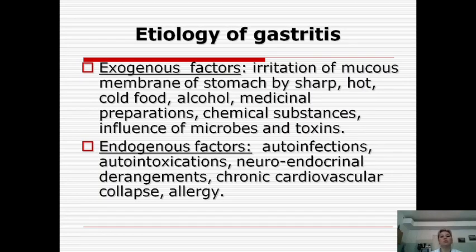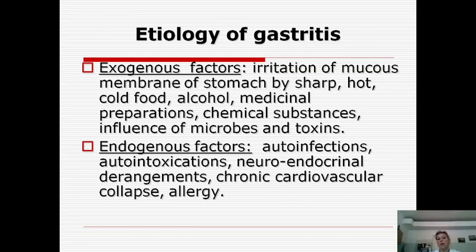Regarding acute gastritis, etiological factors may be exogenous or endogenous. Exogenous factors include irritation of the mucous membrane of the stomach by sharp or cold food, alcohol, medical preparations, chemical substances, and influence of microbes and toxins. Endogenous factors include auto-infections, auto-intoxications, neuroendocrine derangement, chronic cardiovascular diseases, and allergic factors.